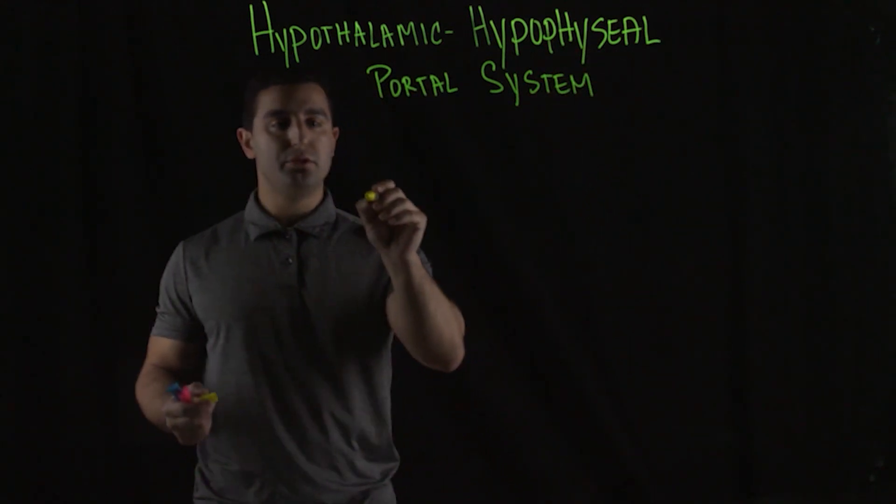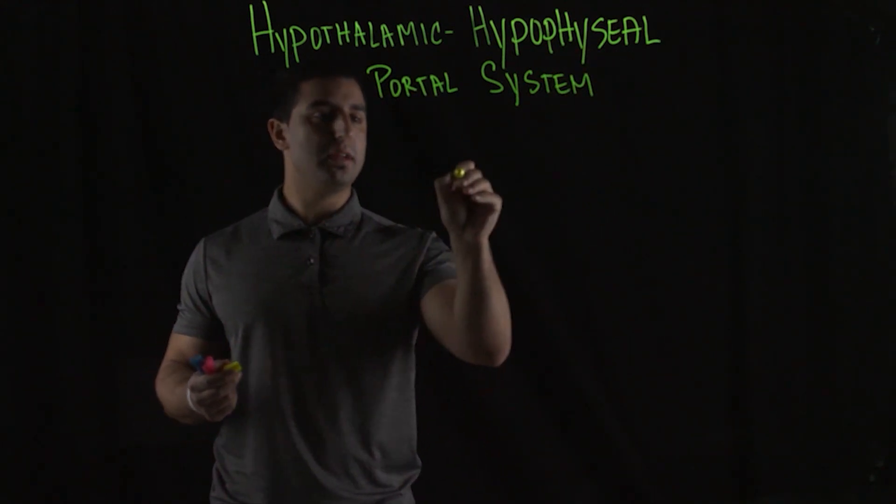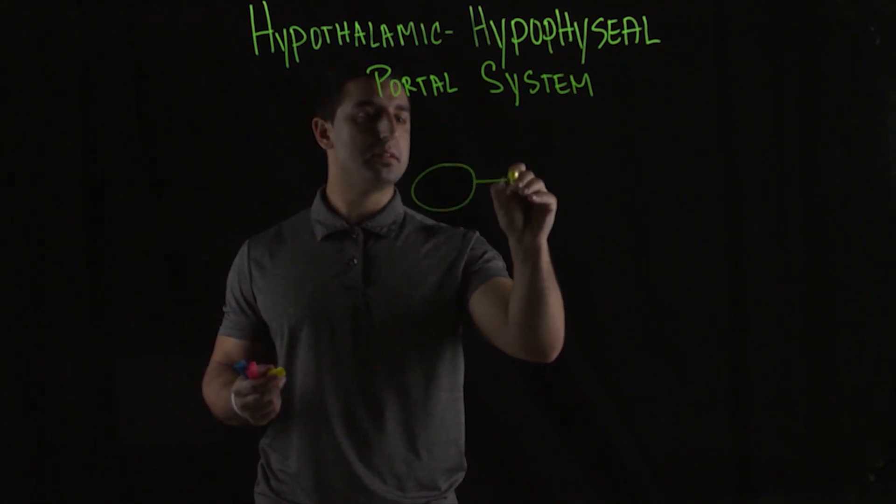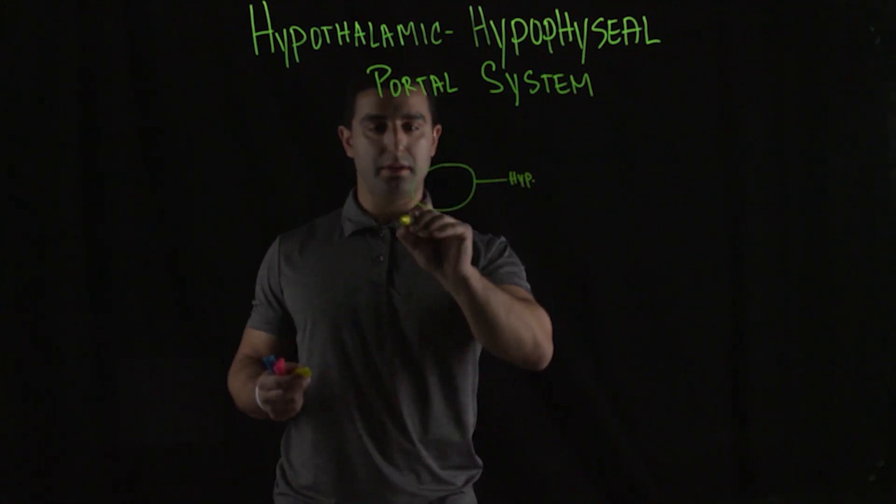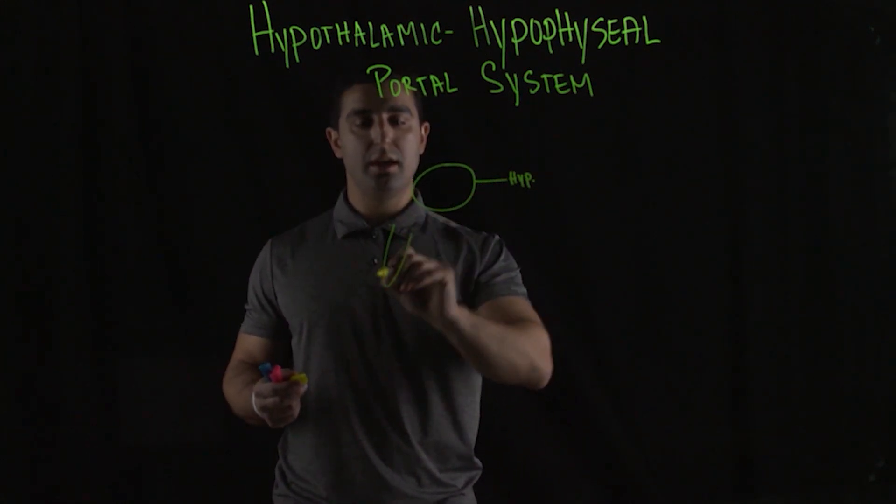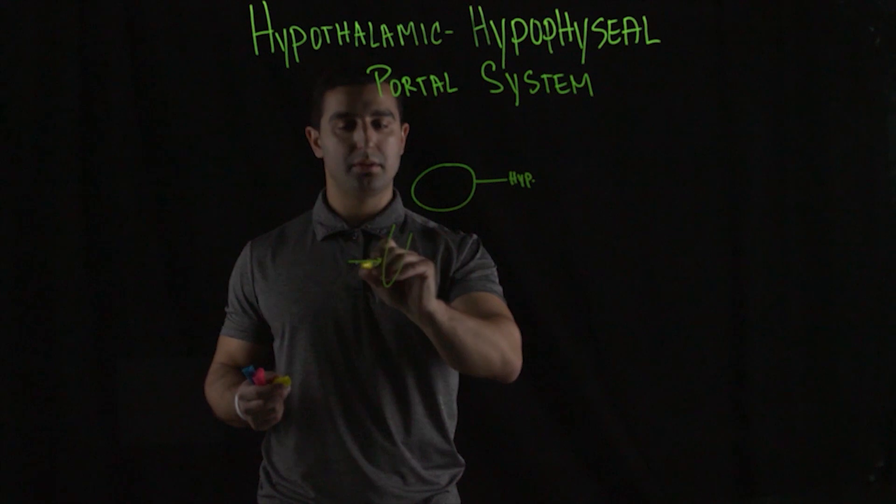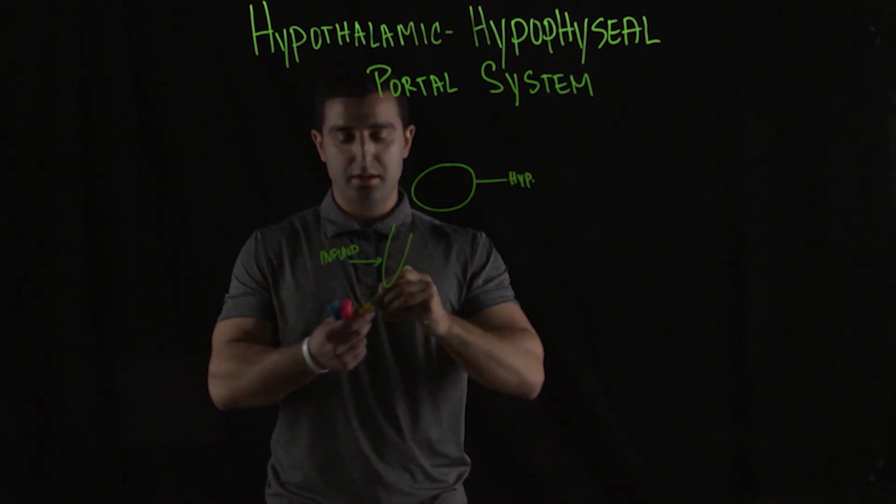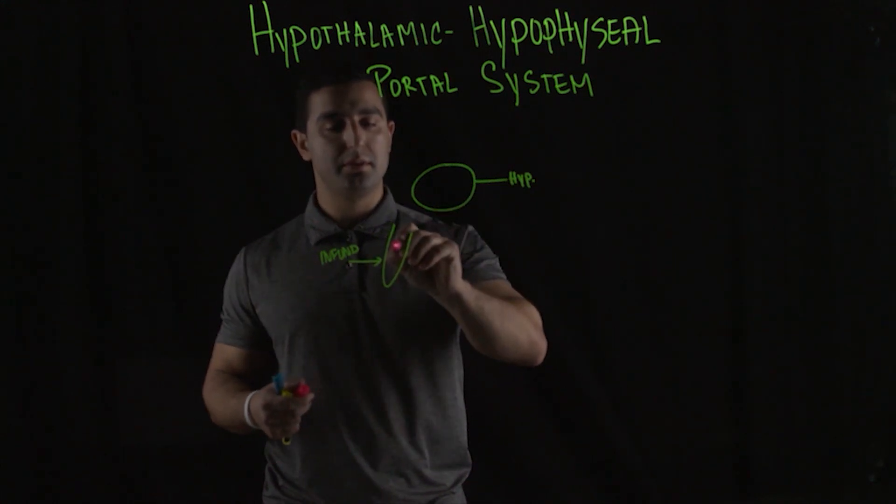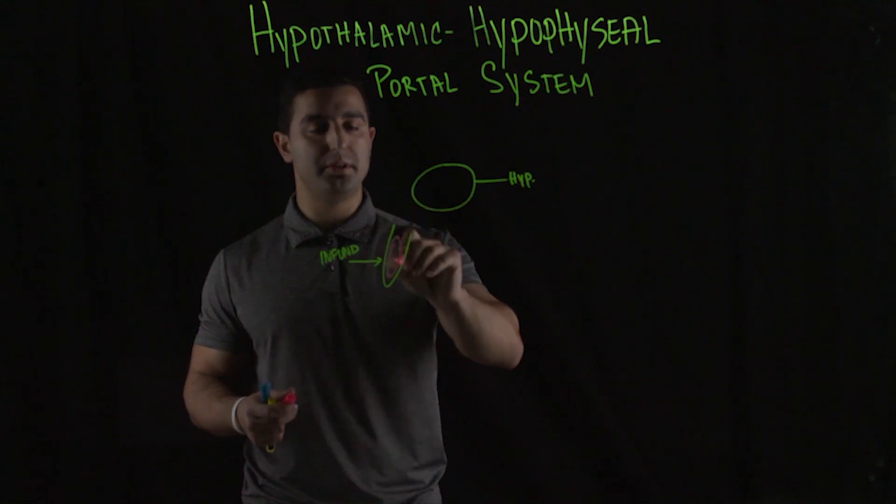So if I were to draw the hypothalamus right here. This is the hypothalamus. And then here in this structure called the infundibulum, you have the pituitary glands. The anterior and the posterior pituitary glands.